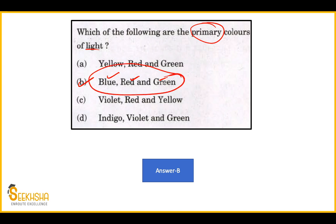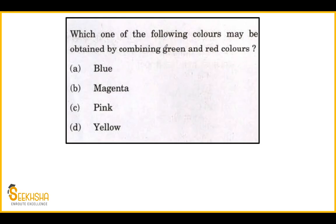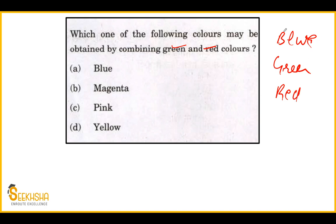The answer is option B: blue, red and green. Let's look at one more question on the same concept and same area. UPSC has asked two questions in one paper. The other question asks which color will form from green and red. The primary colors are blue, green and red. When you mix any two primary colors, different colors are formed.